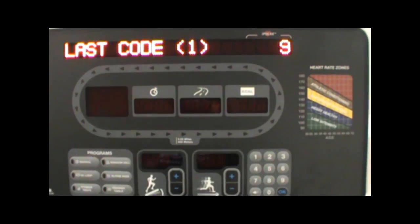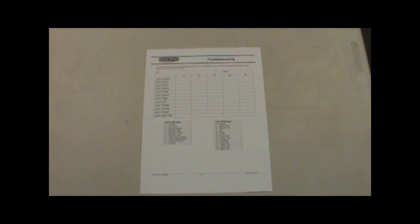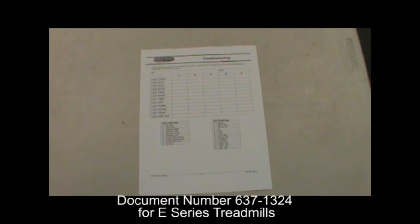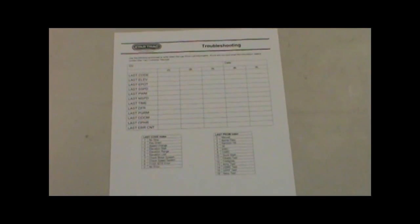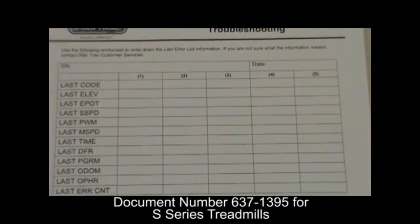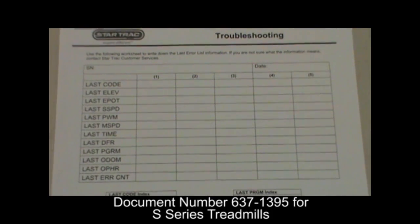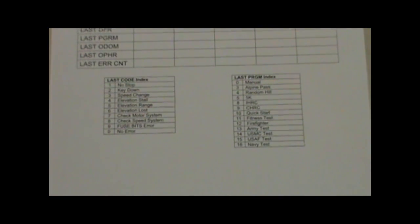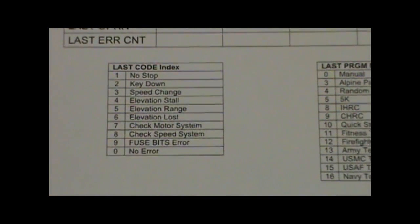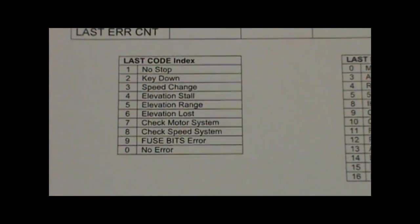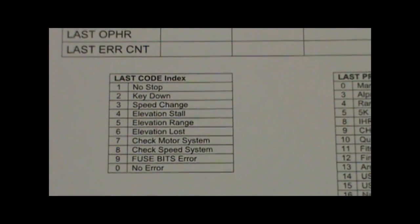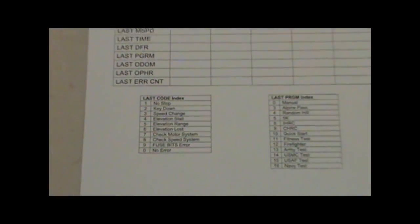This doesn't necessarily mean it's the last code — it is just set one. We strongly recommend that you go on to the customer service website and download the last error list. On the last page of the technical document, there is a worksheet where you can document and write down all the different codes. In the example shown, the code was a nine, which in this case says FuseBits error. Fill out the sheet and you'll have all your information.